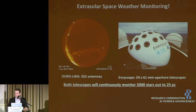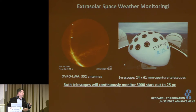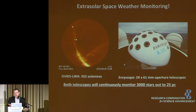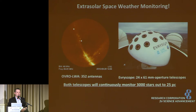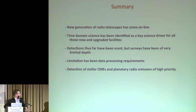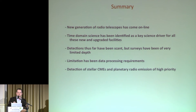Right now we're only doing campaigns — continuous observation also requires handling the data, which we currently can't do. We've done a 100-hour campaign and need a lot more storage before we can observe continuously. To summarize: a new generation of radio telescopes has come online with improvements to existing instruments. Time domain science has been identified as a key science driver for all these facilities. There have been very few detections so far, but that's more to do with handling the data than telescope sensitivity. I think a really high priority will be the detection of stellar CMEs and planetary radio emission and its impact on habitability.